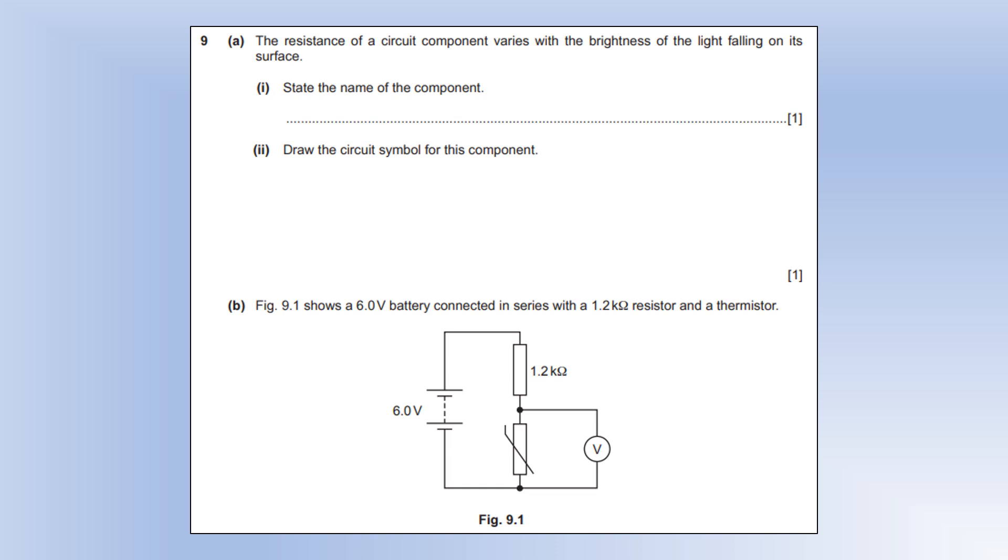The resistance of a circuit component varies with the brightness of the light falling on its surface. State the name of the component. That is a light-dependent resistor. Draw the symbol for that component. There it is. You can see it's a normal resistor where you're showing photons of light coming in.